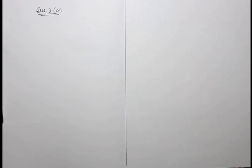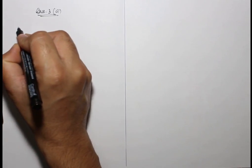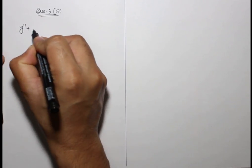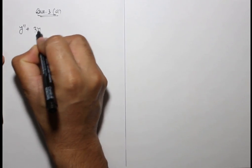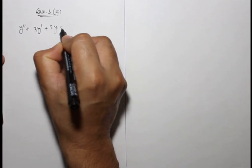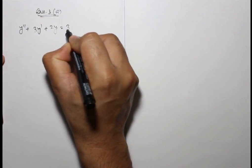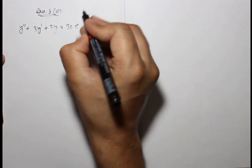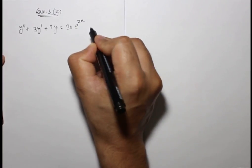This is question number three, part A. Find a general solution of the following non-homogeneous differential equation using variation of parameters. The differential equation is y'' + 3y' + 2y = 30e^(2x).